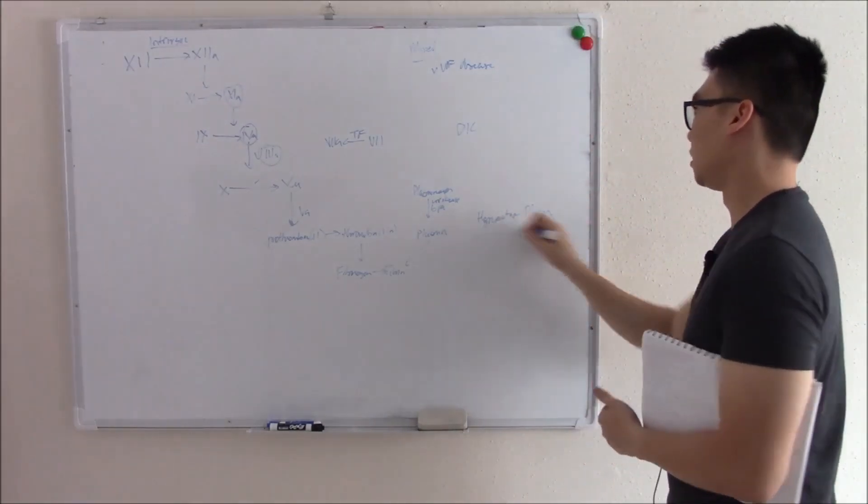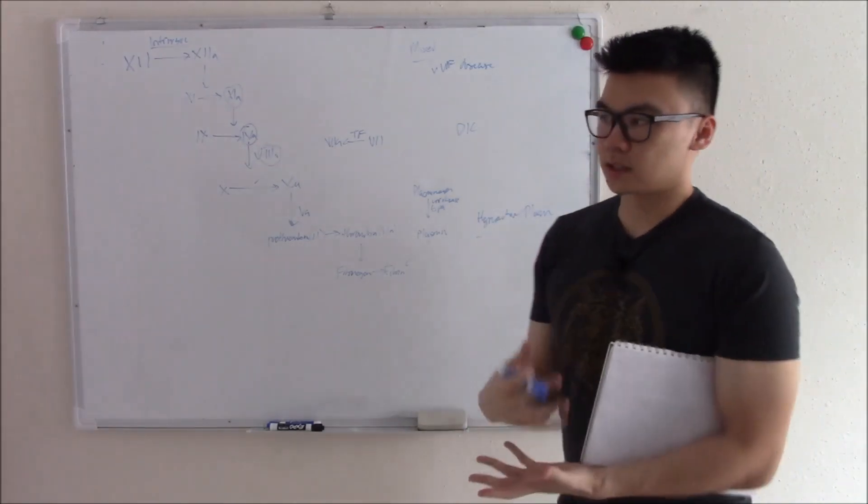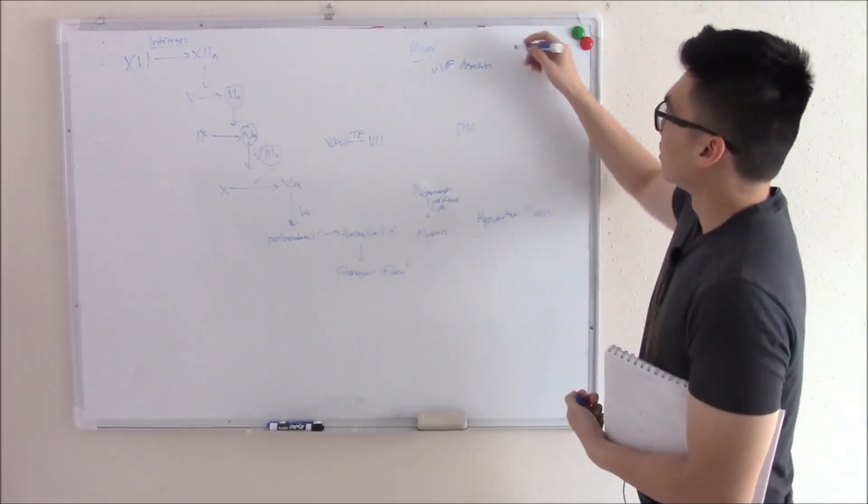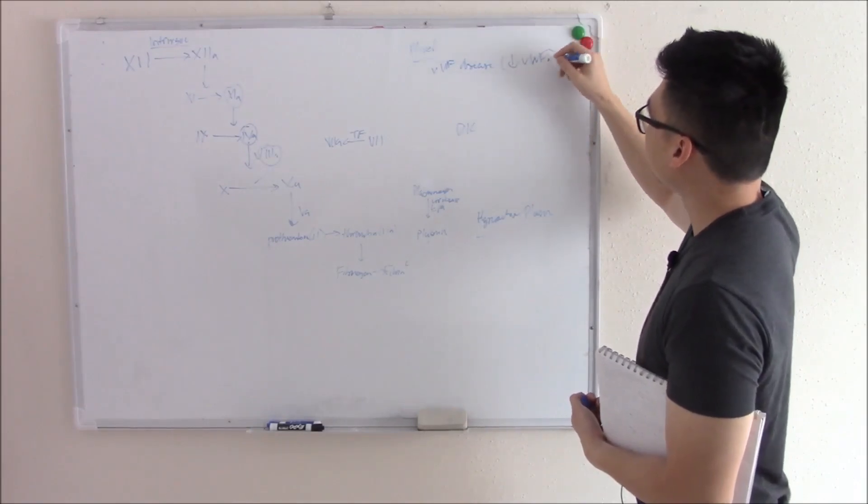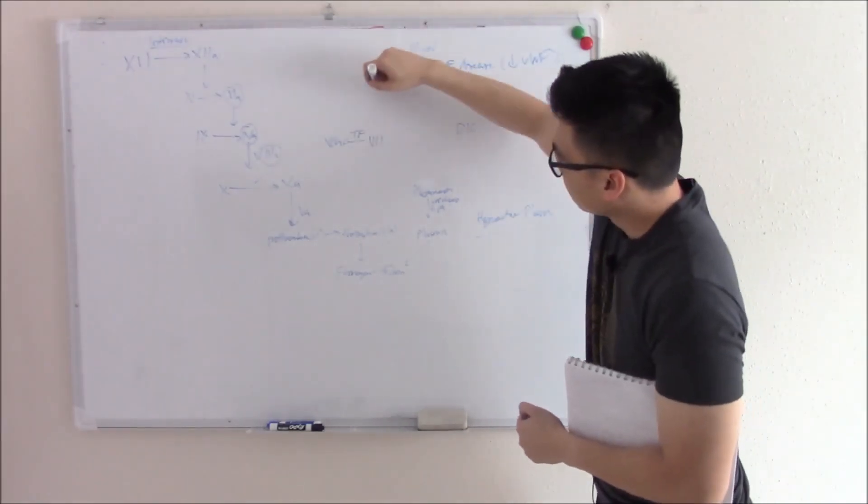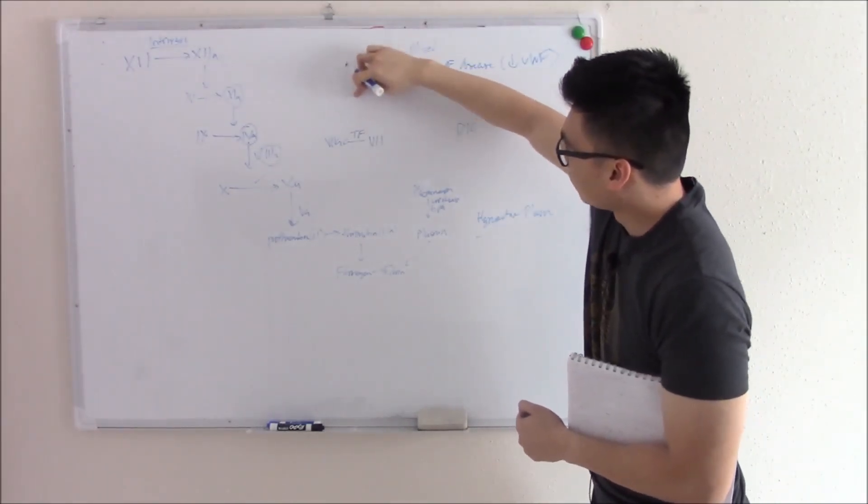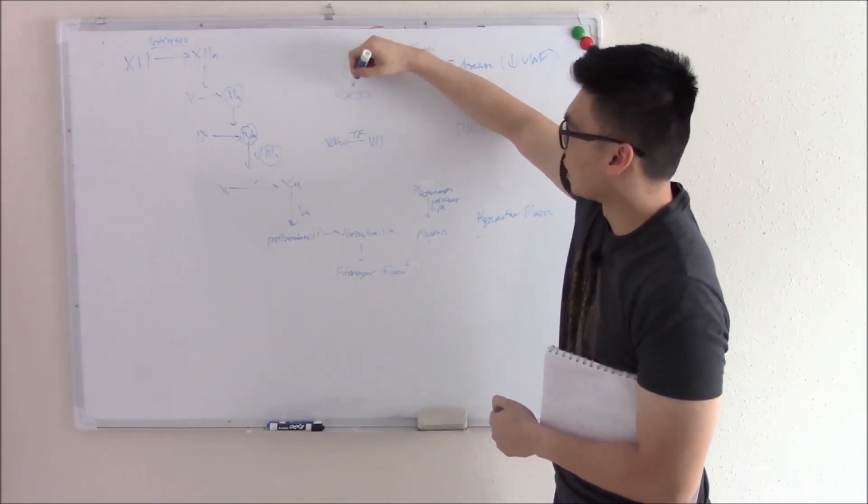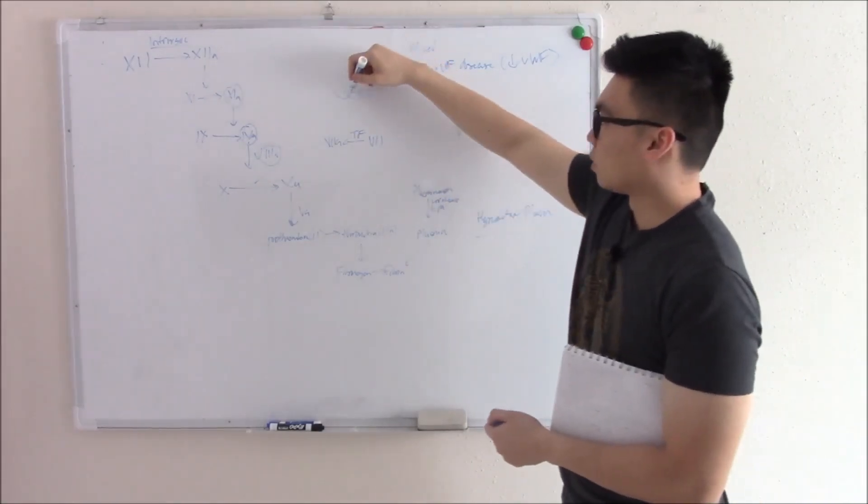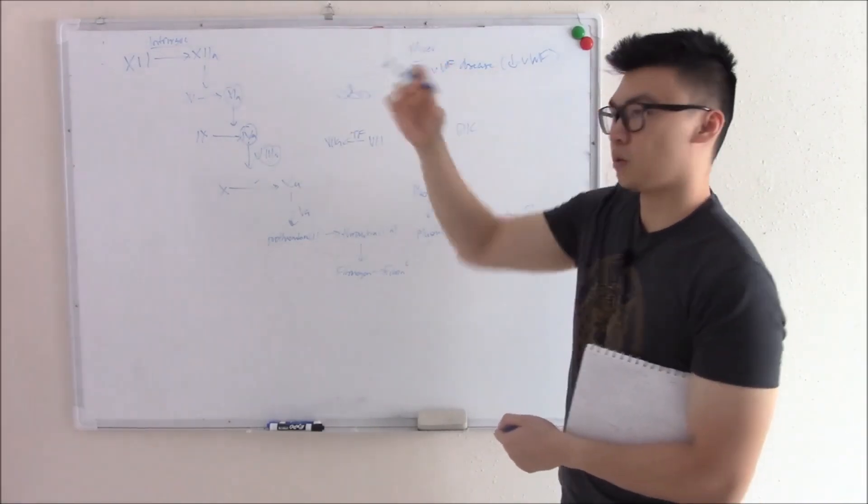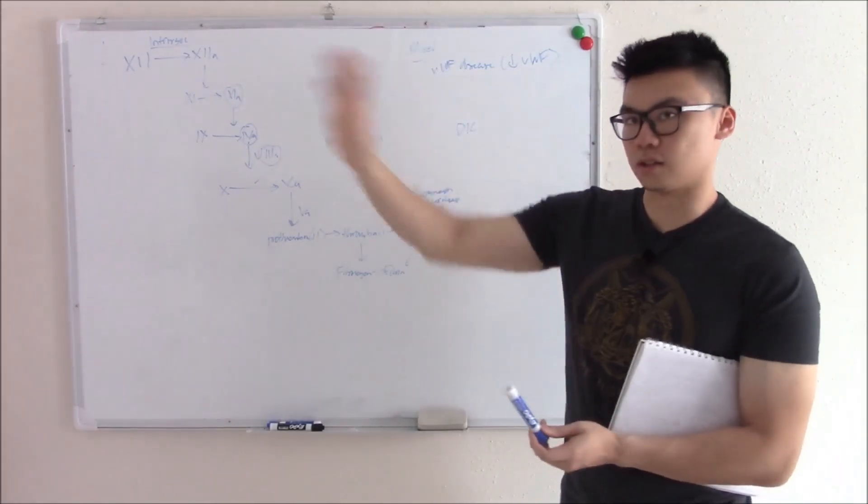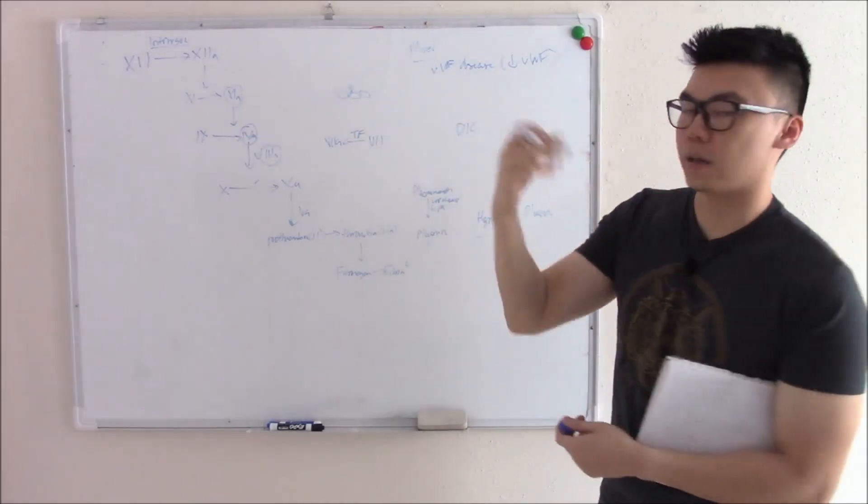We'll start with von Willebrand's disease first. Von Willebrand's disease is due to decreased production of von Willebrand factor. It's inherited. When you have decreased von Willebrand factor, you'll recall, one of the first steps is von Willebrand factor will bind to collagen, and from that, your platelets will bind to that von Willebrand factor. If you don't have that, then that platelet will never bind. So you have a problem with primary hemostasis, and because that platelet never binds, and it never activates everything else, you have a problem with secondary hemostasis. That's why it's a problem with both. That's why it's called mixed.